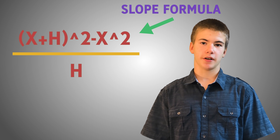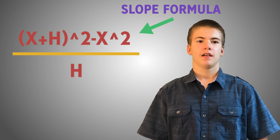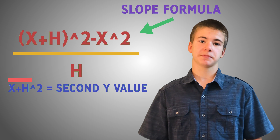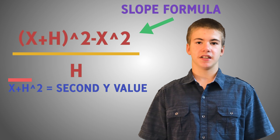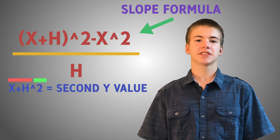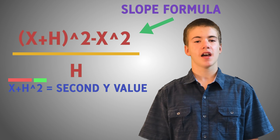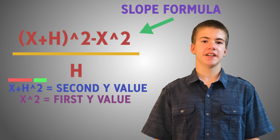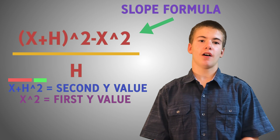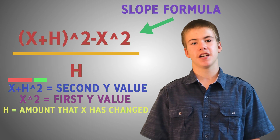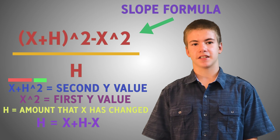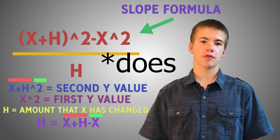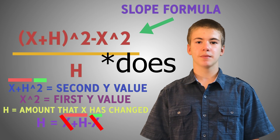When we plug this imaginary infinitely small number h into our formula, it will look like so: x plus h squared minus x squared, all divided by h. x plus h squared represents the second y value, where x plus h is just the new x coordinate, since it is x incremented by h. Then we square it to get the y value, because that is what the function x squared tells us to do. Then we subtract the first y value, which is just x squared. This part is simply the change in y's. Finally, we divide all this by h, or the amount that x has changed.